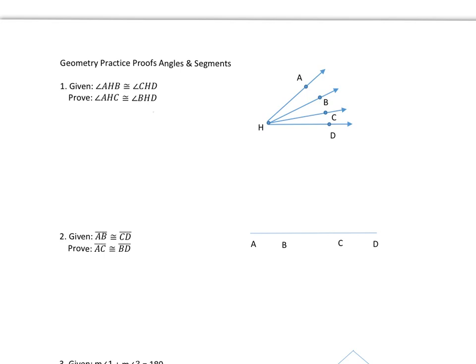Alright, so first, as always in proofs, we are going to start off with a T-chart proof. So we are going to put in our statements here and our reasons here. Let's go ahead and see. First thing we always do is fill in the givens. So we're going to put step one and write in angle AHB is congruent to angle CHD, and this is our given.